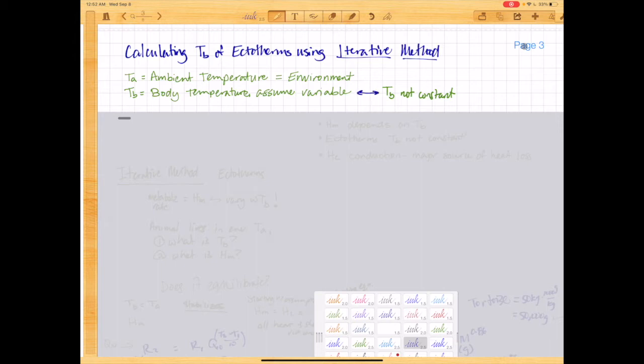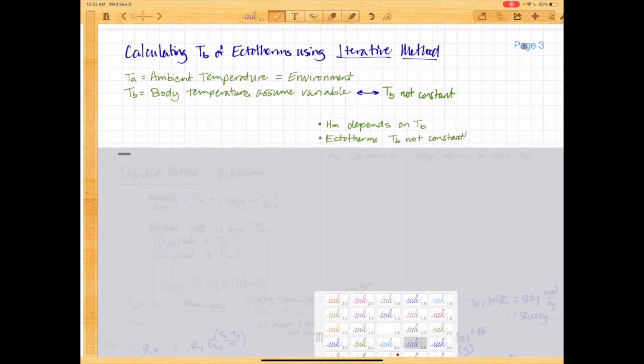Here's the thing. The heat of metabolism depends on body temperature. But in ectotherms, body temperature is not constant. In fact, metabolism can raise body temperature just a little bit. And when that happens, you're going to also then raise the metabolism just a little bit. Now if we assume that the major source of heat loss is the heat of conduction.